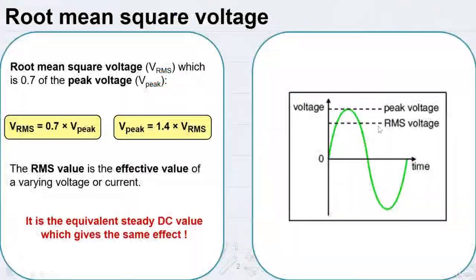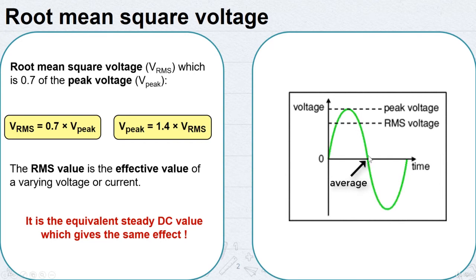You might find it helpful to think of the RMS value as sort of average, but please remember that it is not really the average. In fact, the average voltage of a typical AC signal is zero, because the positive and negative parts are exactly cancelled out.